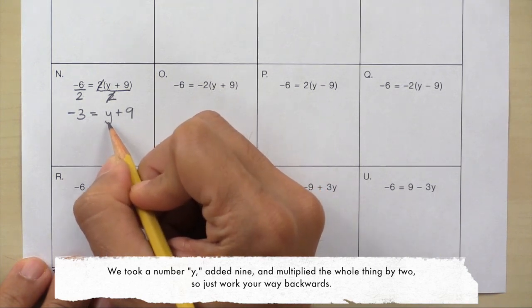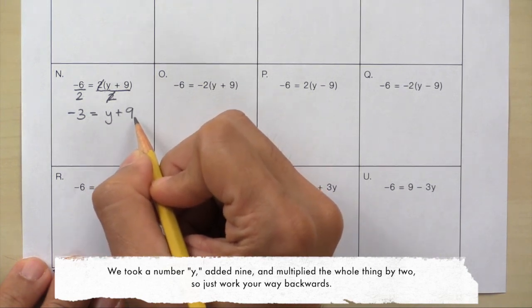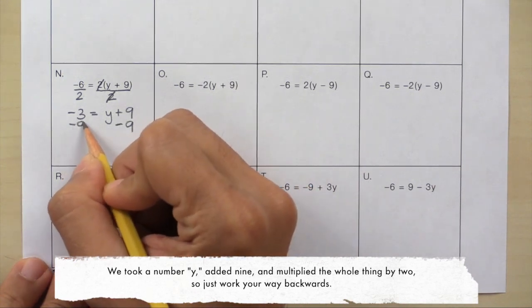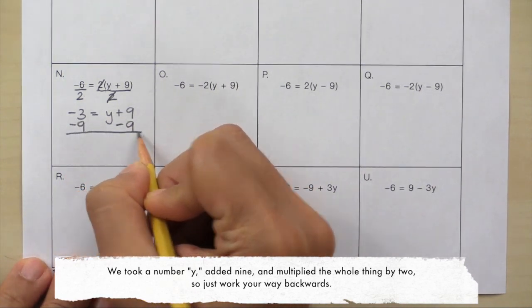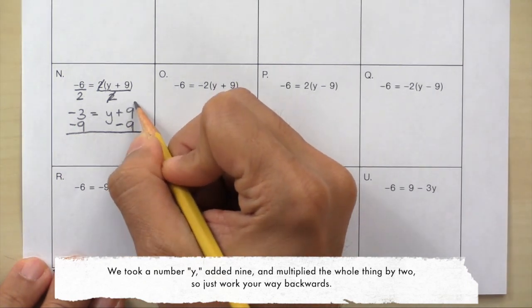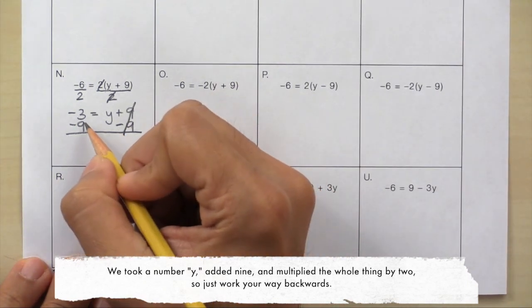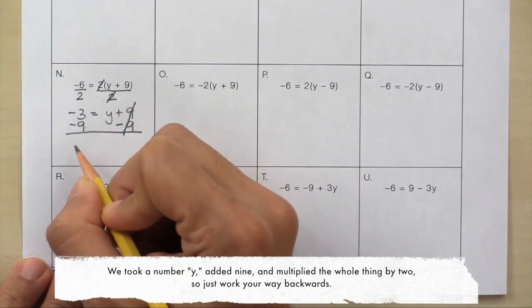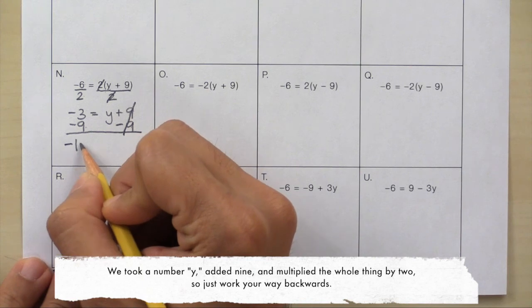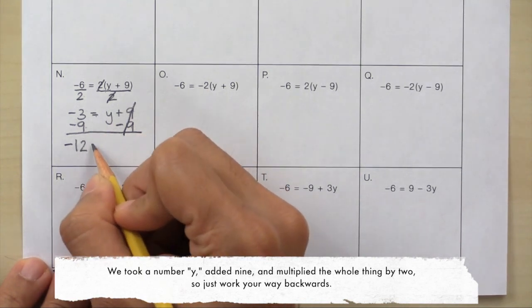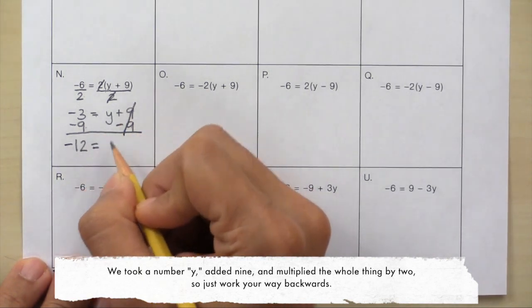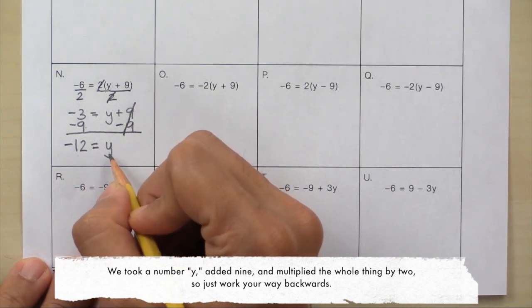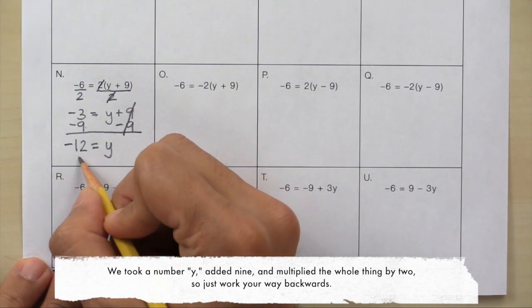Y is still not by itself because it's with plus 9. So subtract 9. 9 minus 9 will give us 0. Here we have negative 3 and negative 9. That gives us negative 12. Here's the equal sign. And here's negative 12 equals y. Negative 12 equals y or y equals negative 12.